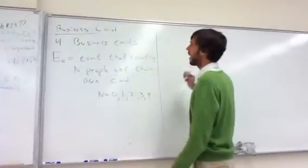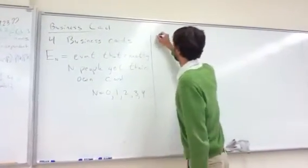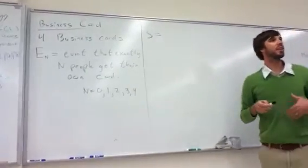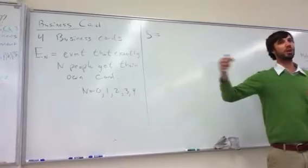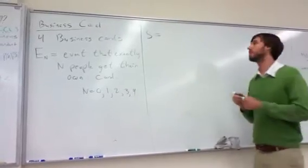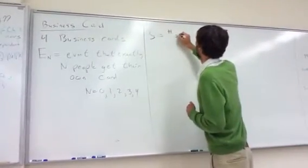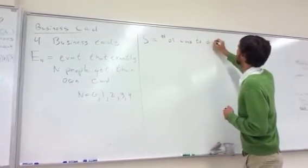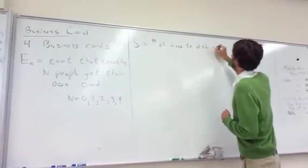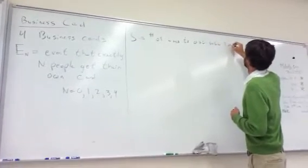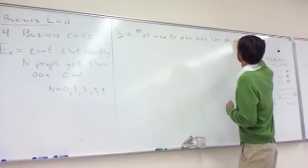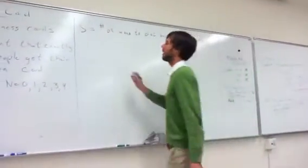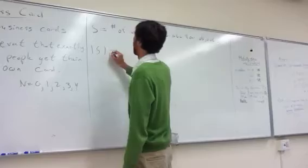So the first step is to write down what the sample space is for this experiment, and the sample space here would be the number of ways in which the cards could be distributed amongst the four people. The number of ways to distribute four objects, or to order four objects, amongst the four people.